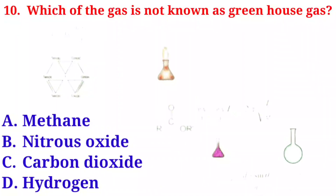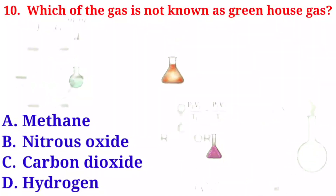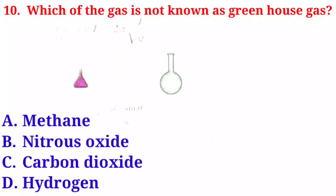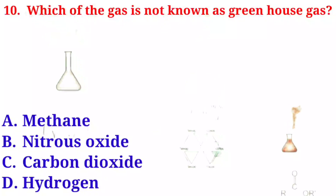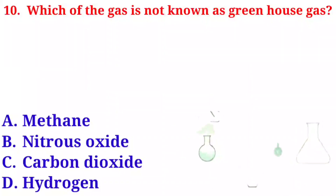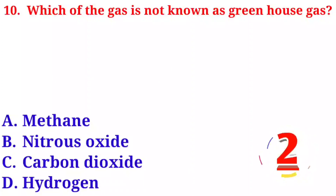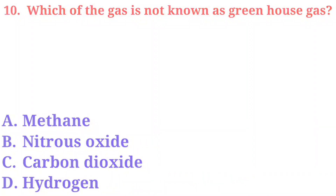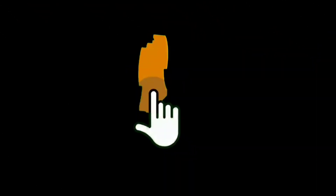Question number ten: which of the following gases is known as a greenhouse gas? Option A: methane. Option B: nitrous oxide. Option C: carbon dioxide. Option D: hydrogen. The correct answer is option D, hydrogen.